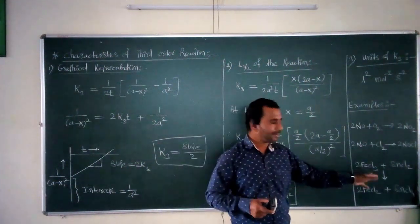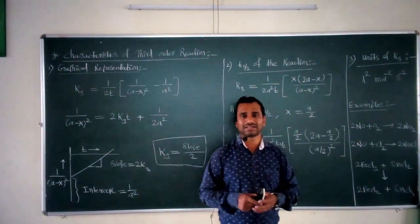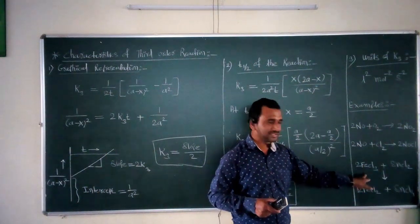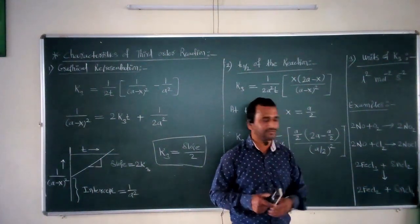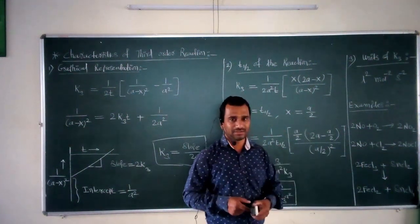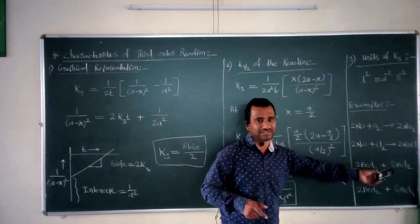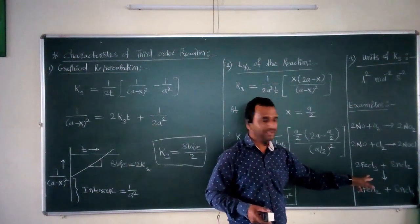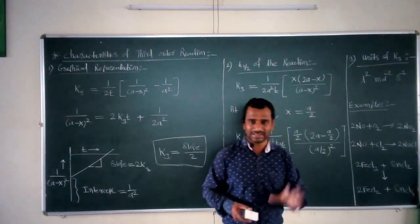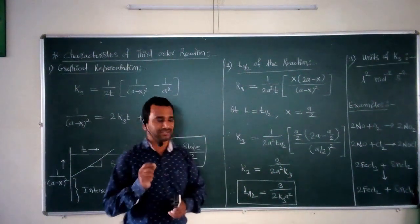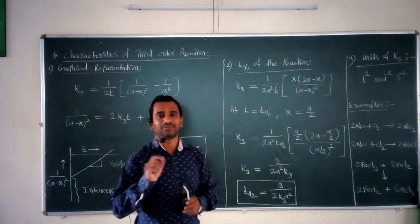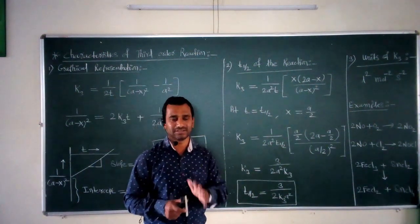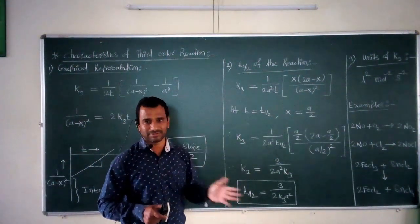For an example of a third order reaction in a solution state: the reduction of ferric chloride with the help of stannous chloride is an example. In this reaction, FeCl₃ is converted into FeCl₂ — the reduction of ferric chloride into ferrous chloride with the help of stannous chloride is the example of a third order reaction taking place in a solution state.